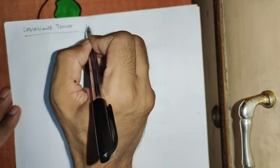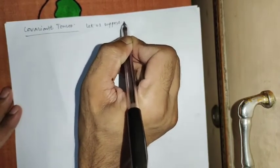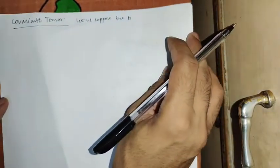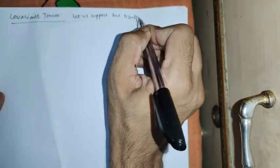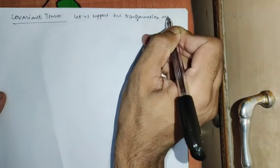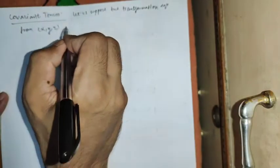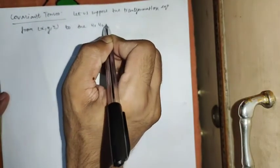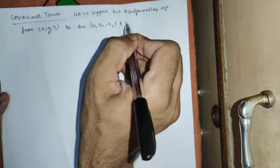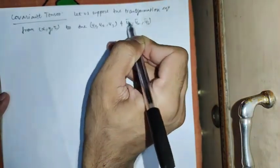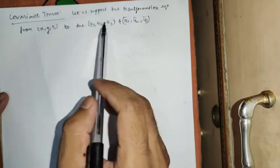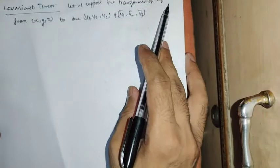Let us suppose the transformation equation from Cartesian coordinates in three-dimensional x, y, z to two other systems: u1, u2, u3 and u1-bar, u2-bar, u3-bar. These are the two systems in which the transformation is taking place from x, y, z.